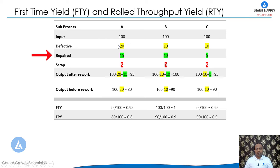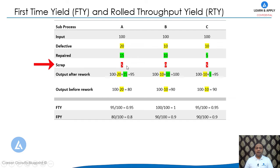The third row in the table shows repaired products — defectives that came out of the process and were repaired. From Process A, 15 products were repaired; from Process B, 10; and from Process C, 5. The fourth row shows scrapped products — items where rework was not possible. From Process A, 5 products were scrapped.